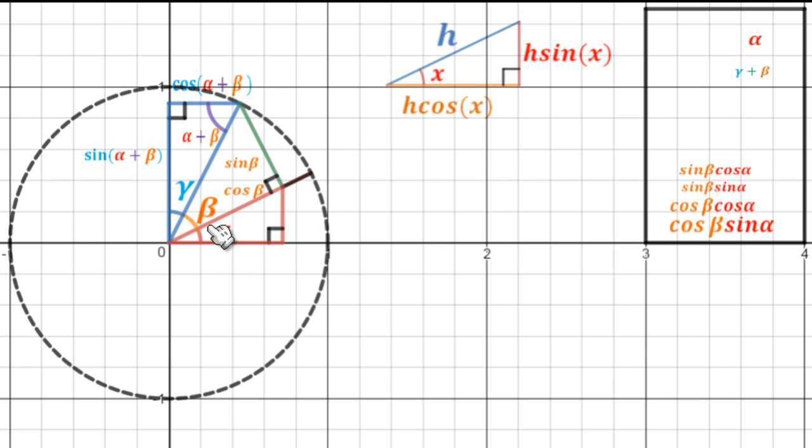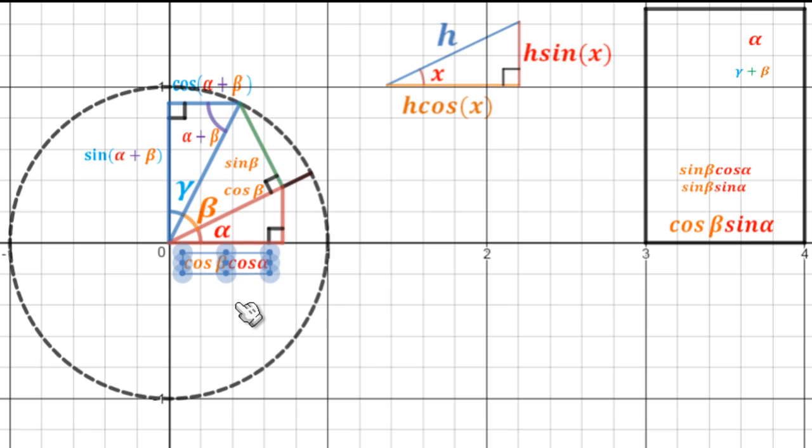And notice that the hypotenuse is no longer 1, it's cosine of beta. So the adjacent side will be cosine of beta cos alpha, and the opposite side will be cosine of beta sin alpha.